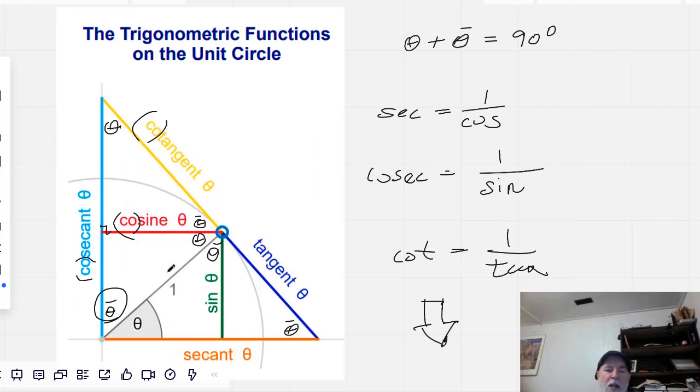And I would recommend it as an exercise to go through each of these and justify why this is the sine, the cosine, the tangent, the cotangent, the secant, the cosecant of theta. And that will be a good exercise to get a handle of how these functions are all related to one another.